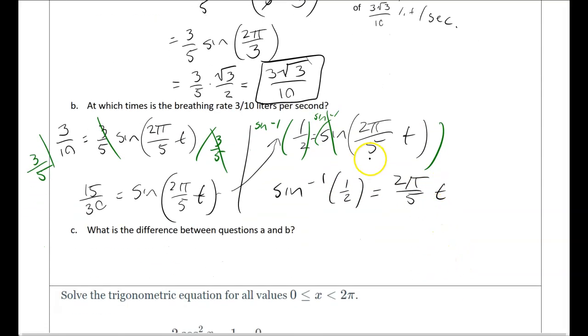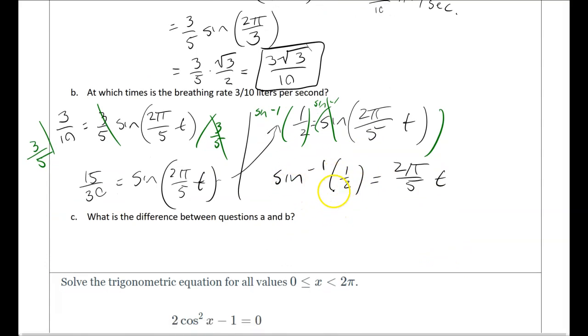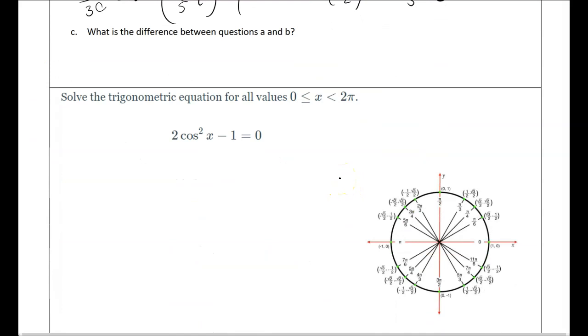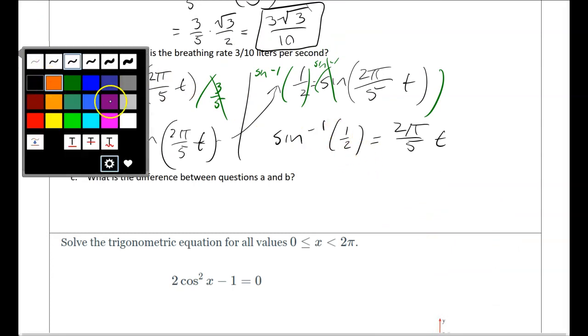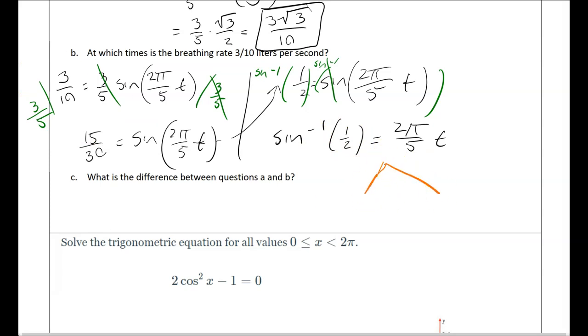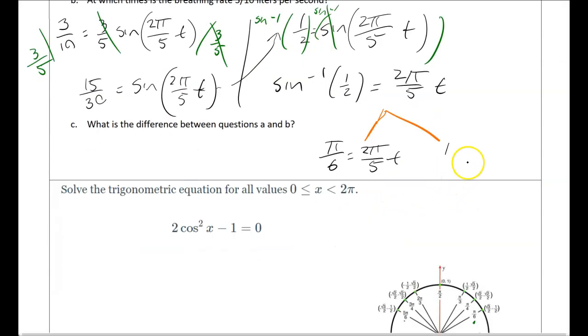So now this is an equation where we could get a decimal from our calculator or we could use the unit circle to solve it. So I'm looking for anywhere where my y is a 1 half. And I have pi over 3 and, oh sorry, my y is a 1 half. So I have pi over 6 and I have 5 pi over 6. So I actually now have two equations. So I can split that up into pi over 6 equals 2 pi over 5 t and 5 pi over 6 equals 2 pi over 5 t.